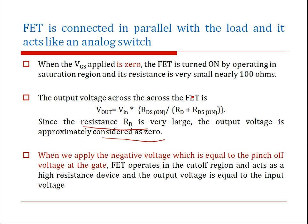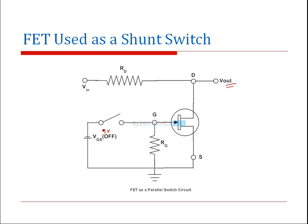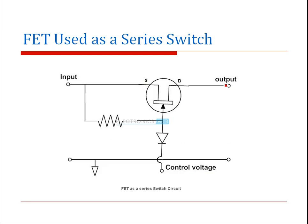When a negative voltage equal to the pinch-off voltage is applied, the FET operates in the cutoff region. Under that condition, this FET offers very high resistance, and the input signal appears directly at the output. So in the shunt configuration, applying a sufficiently negative VGS causes the input to be obtained at the output.